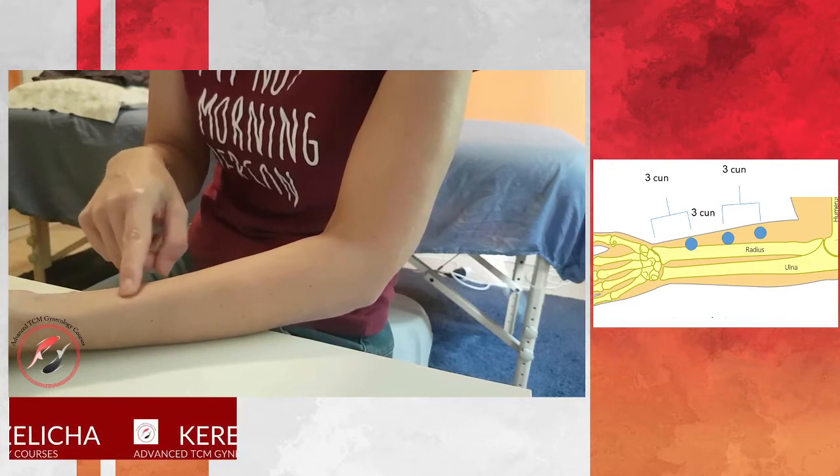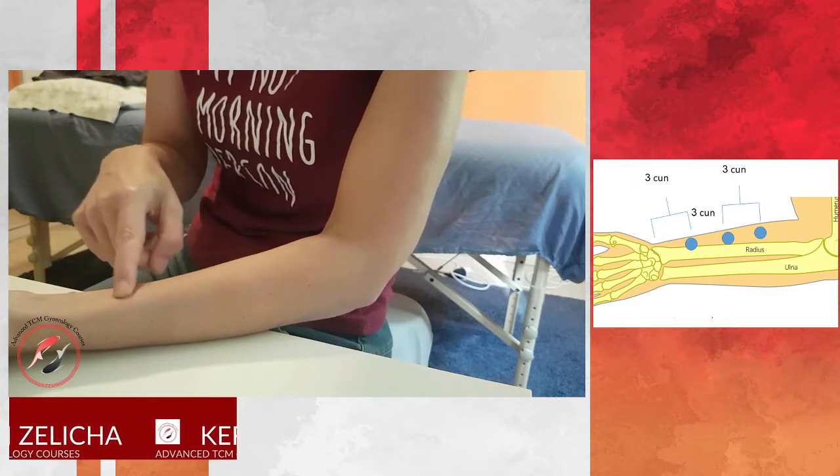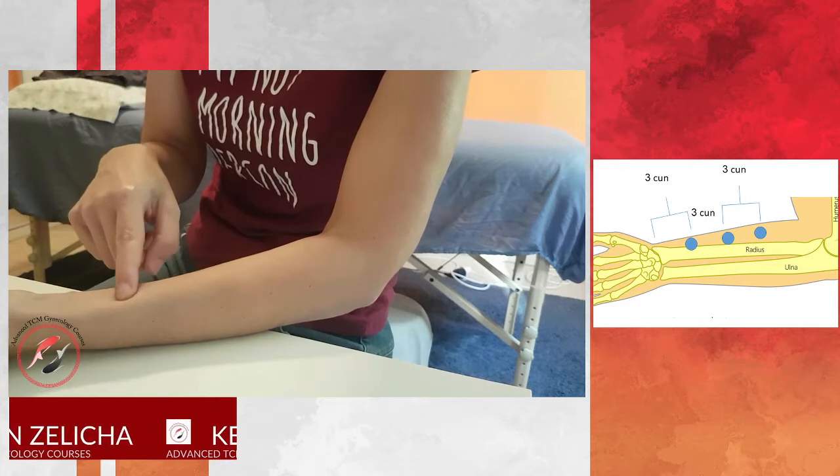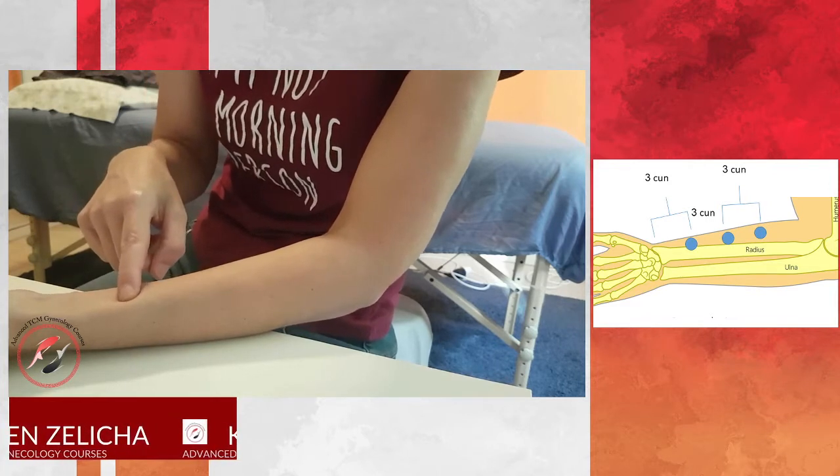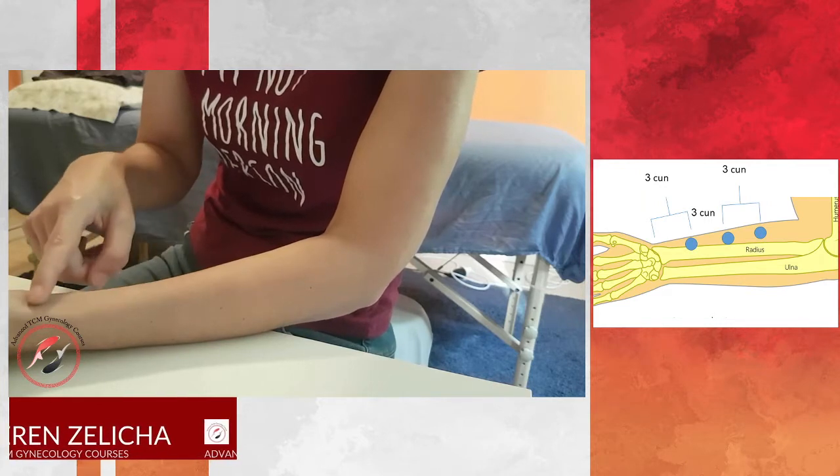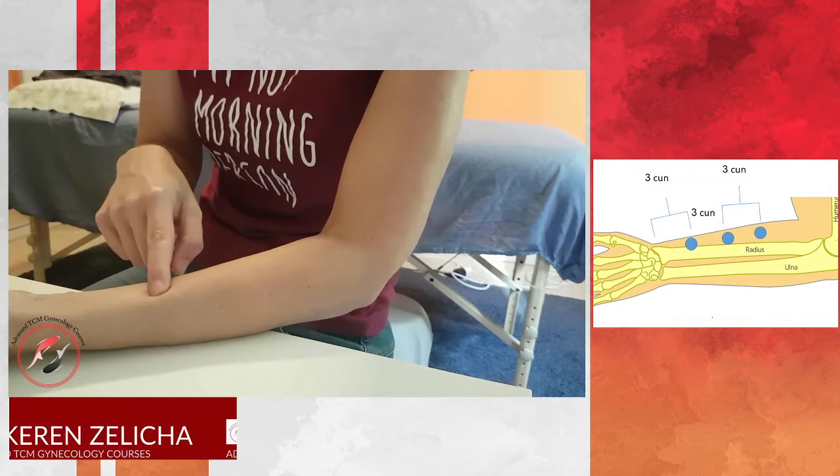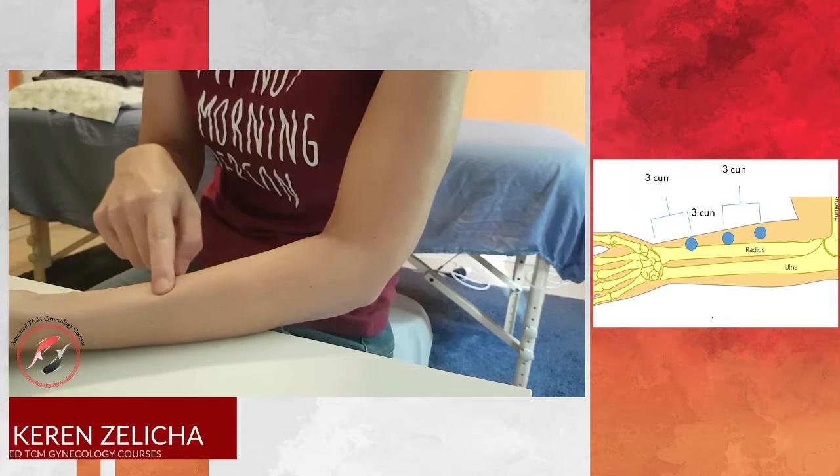Usually I locate it three tsun. Most of the Taiwanese doctors locate the first one, Ren Shi 3313, three tsun above lung 9. American teachers usually locate it four tsun above lung 9. So it depends.